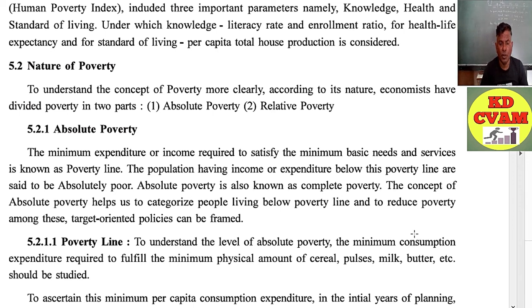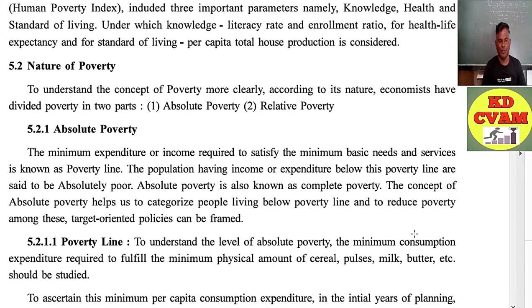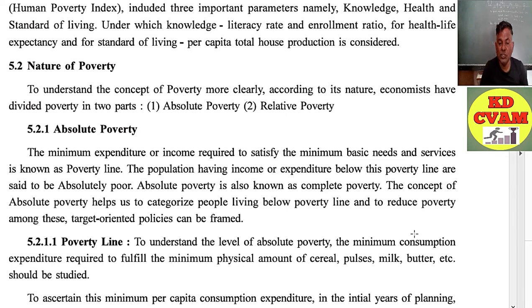To understand the concept of poverty more clearly according to its nature, economists have divided poverty into two types: absolute poverty and relative poverty. Absolute poverty means complete poverty, and relative poverty means comparative poverty. Absolute poverty refers to the minimum expenditure or income required to satisfy minimum basic needs — food, clothing, shelter, health and services — which is known as the poverty line. The population having income or expenditure below this poverty line are said to be absolutely poor.